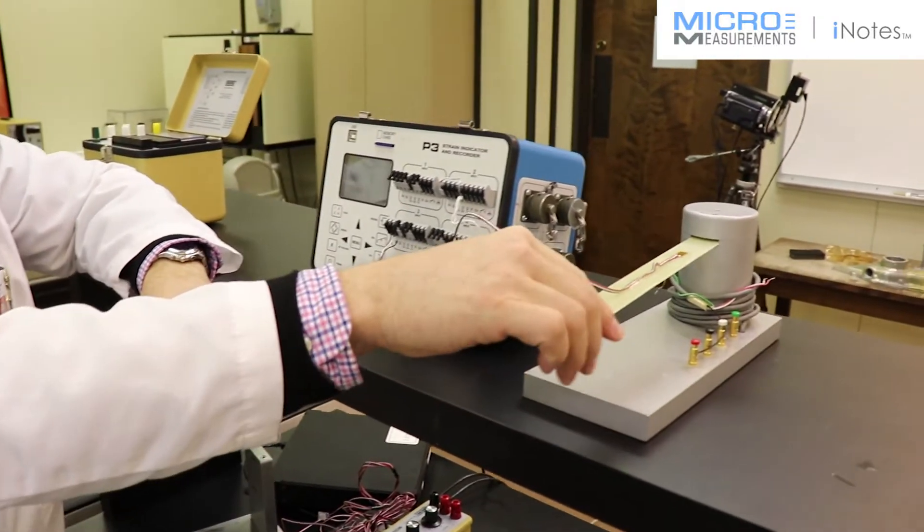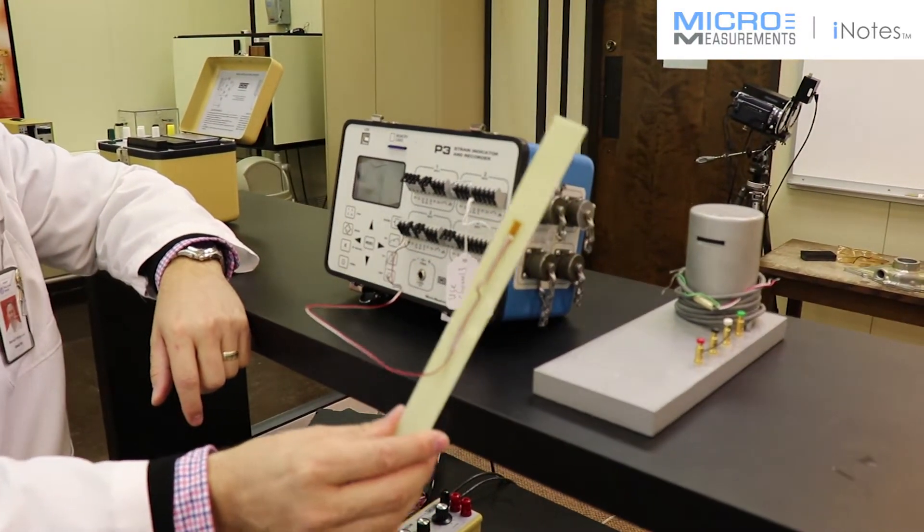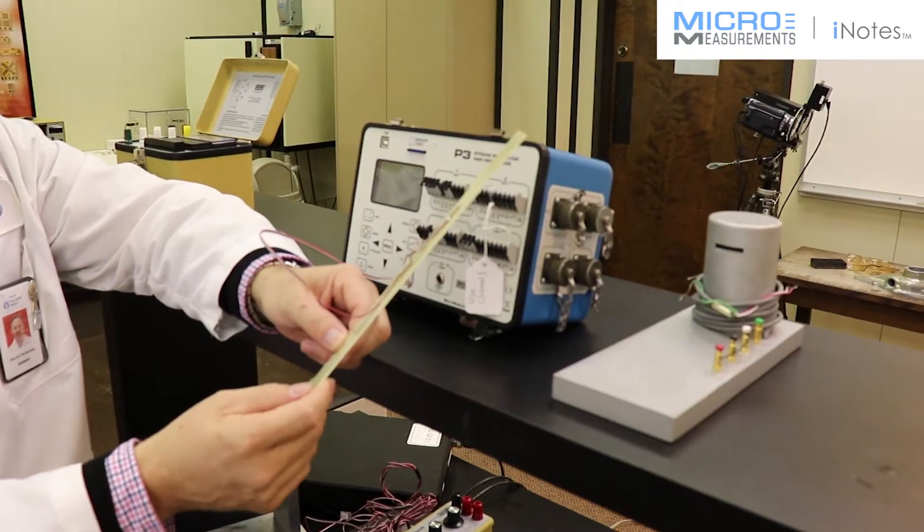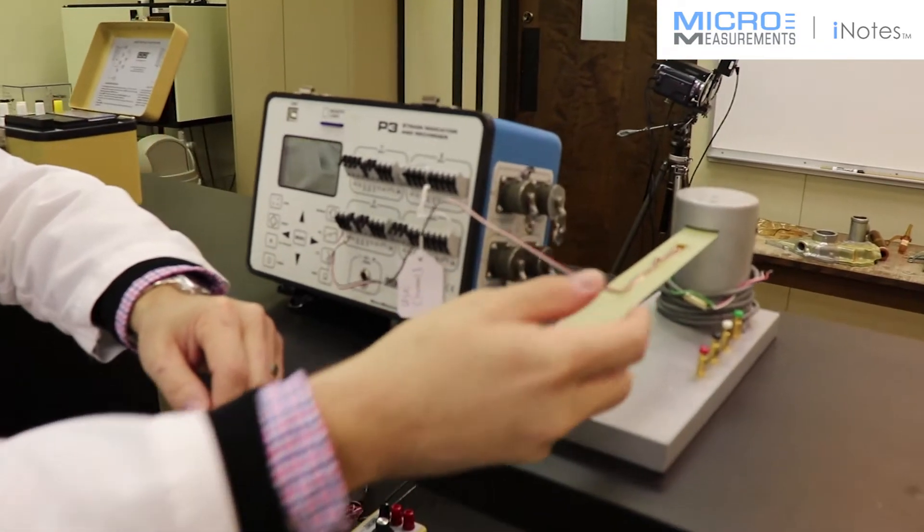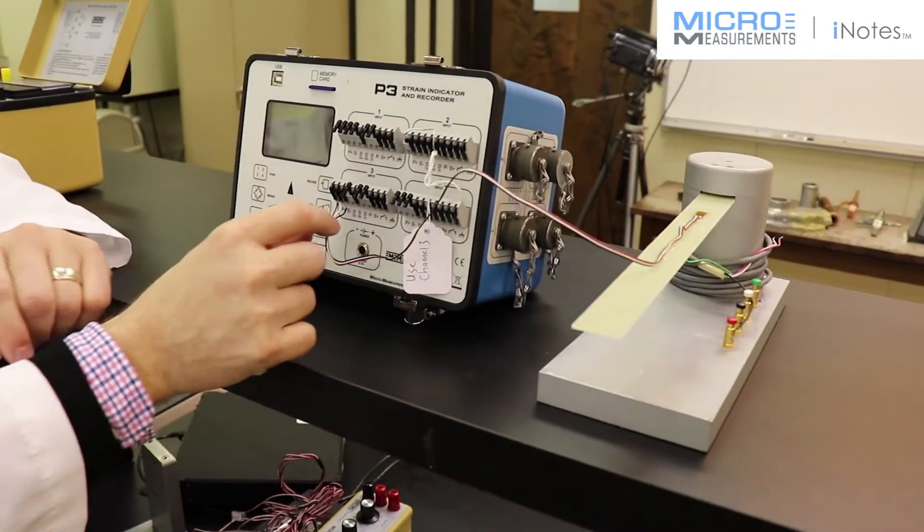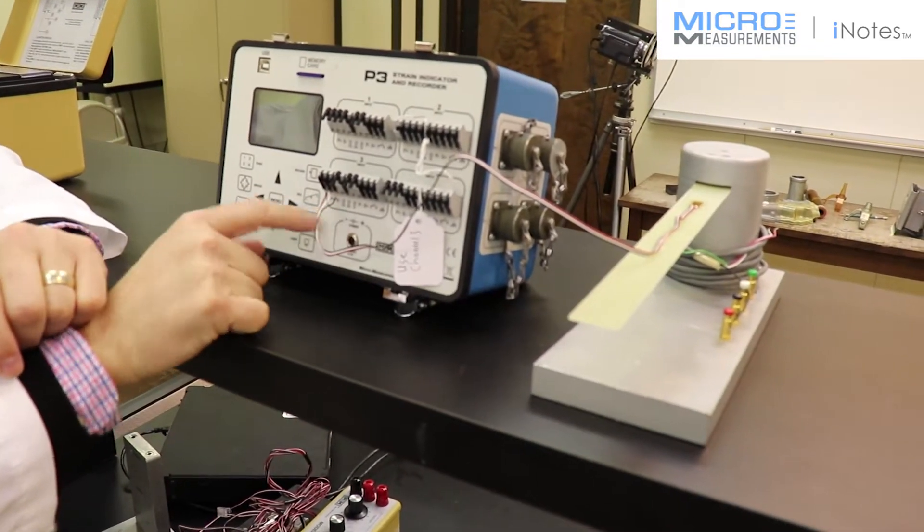We have a strain gauge installed on a piece of G10. It's a 120-ohm gauge wired as a three-wire quarter bridge, connected to P plus, S minus, and D120.